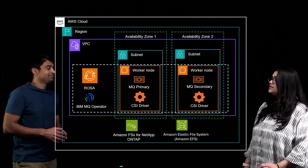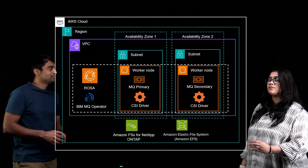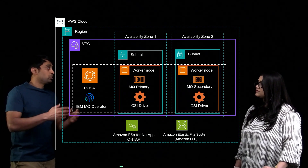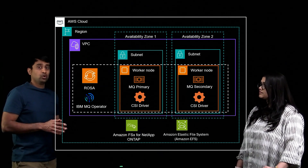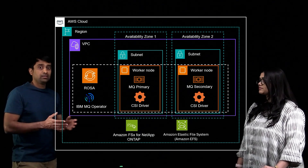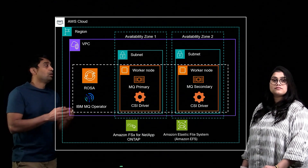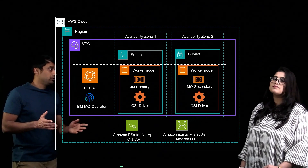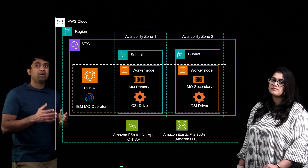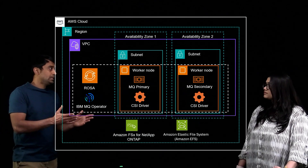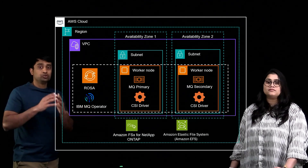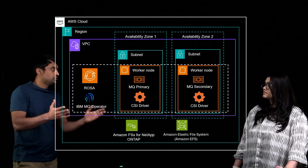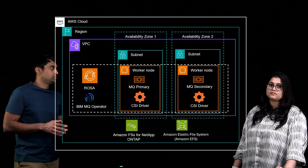Is there anything else we need to consider when deploying with ROSA? When customers deploy in a production environment, we recommend going with three availability zones. ROSA deploys to either one or three availability zones. In this example, we are showing only two availability zones because with IBM MQ in multi-instance mode, you only need two availability zones to run your workloads. You still have ROSA working across three availability zones, but your workload is just deployed on two.